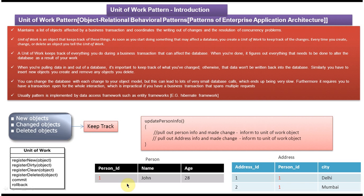To explain this, I have taken a person table and address table. The person table has three columns: person ID, name, and age, with one row representing John. John has two addresses — one in Intel and another in Mumbai. Person ID is the primary key in the person table and acts as a foreign key in the address table.